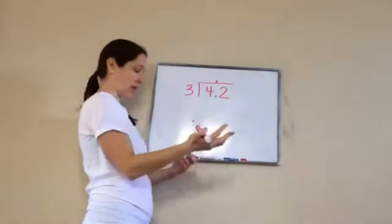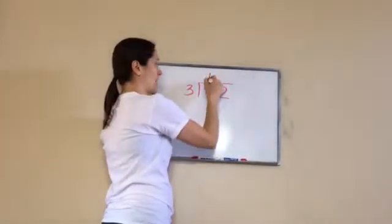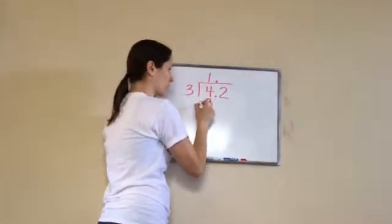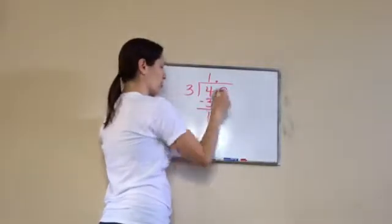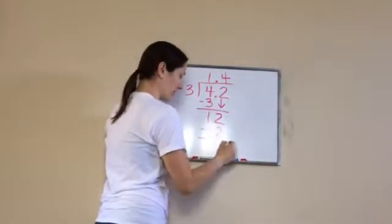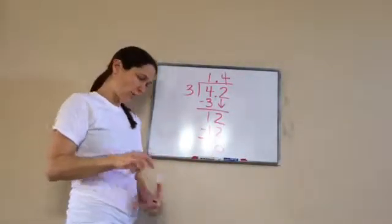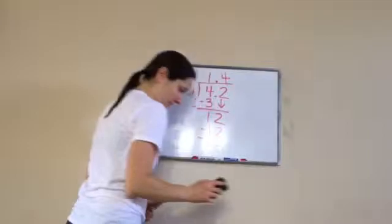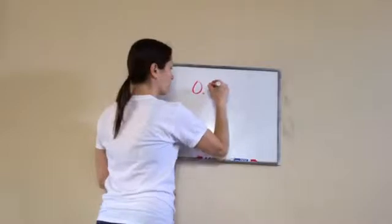So we go: three goes into four one time, one times three is three, bring down. Three goes into 12 four times, four times three is 12. That ends up making it very even, so the answer ends up becoming 1.4. All right, let's try another one. Write this number on your paper.